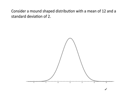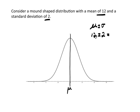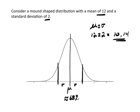Let's apply the empirical rule to mound-shaped data with a mean of 12 and a standard deviation of 2. Right in the middle is mu equals 12. Taking mu plus and minus one sigma — that's 12 plus and minus 2 — gives us 10 on the lower end and 14 on the upper end. So one standard deviation below is 10, one standard deviation above is 14. According to the empirical rule, approximately 68% of all the data should fall between 10 and 14. If I actually have the data, I can simply count how many values fall between 10 and 14 and check whether that's about 68%.